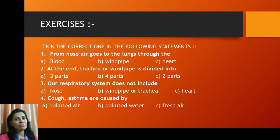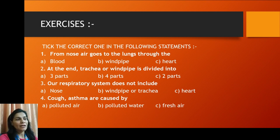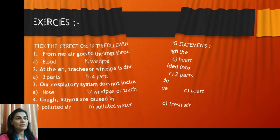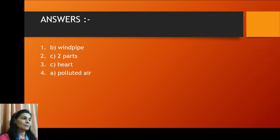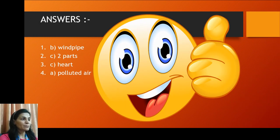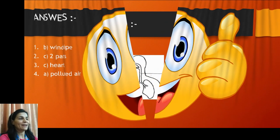Children, you have to revise your assignment and do your assignment on a daily basis. Please go through the lesson one by one. Here are the answers: B — windpipe; C — two parts; C — heart; A — polluted air.